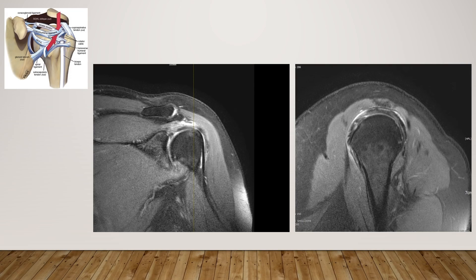The peripheral part of the coracohumeral ligament is the ligament at the greater tubercle and lateral one-third of the humeral head. On the coronal image, it belongs to the outer one-third of the humeral head and greater tubercle. On the sagittal image, the peripheral coracohumeral ligament is very flat and located superficial to the bicep tendon.